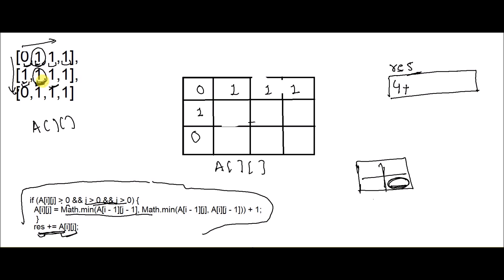When we reach element at index (1,1), the current element is one. We look at its neighbors in the updated matrix — we are updating the original matrix in place. We take the minimum of the three neighbors and add one to it, which gives one, and add this to the result. This means it can be present in one square of unit length as the right bottom-most element.